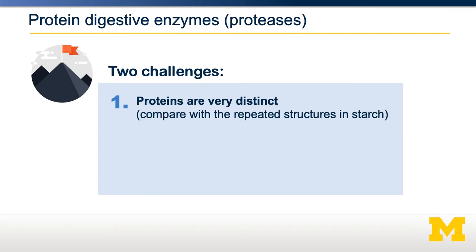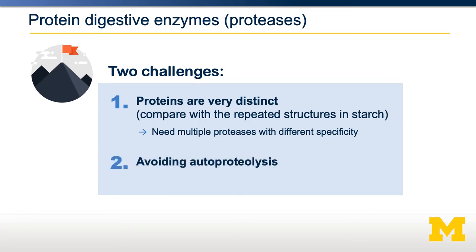Protein digestion actually poses two interesting challenges. First, proteins are very unique — there are tens of thousands of different proteins we could eat, all with different structures and primary sequences. To solve that, we need multiple different proteases with different specificity so we can break down a variety of proteins. The second challenge is that protein digestive enzymes are themselves proteins, and we don't want them digesting themselves — that's called autoproteolysis. To avoid that, we make our protein digestive enzymes in an inactive form and then turn them on when needed.